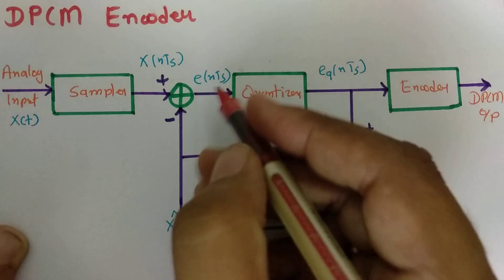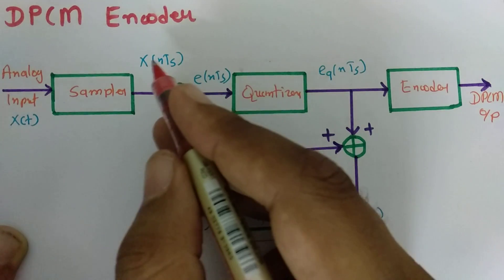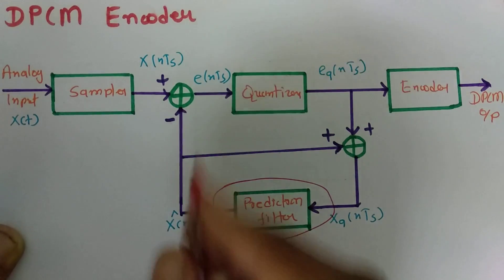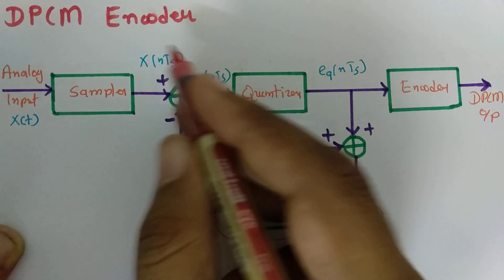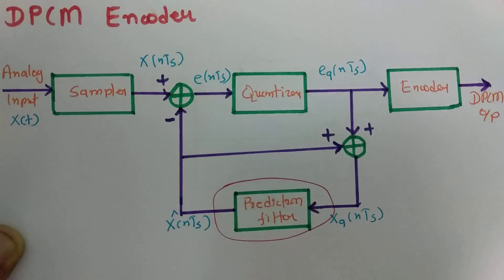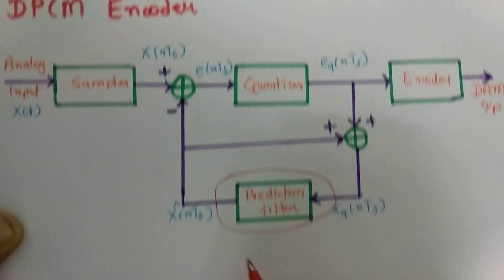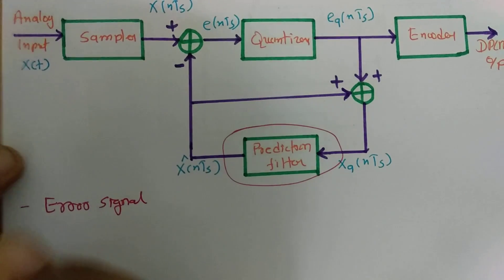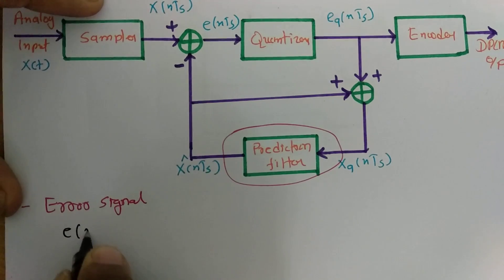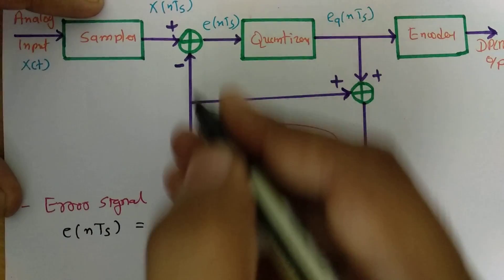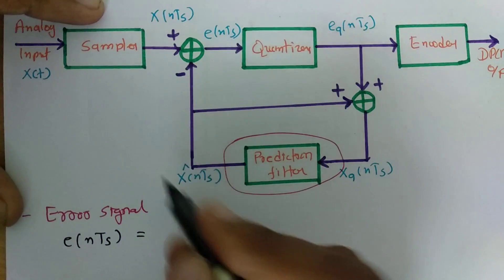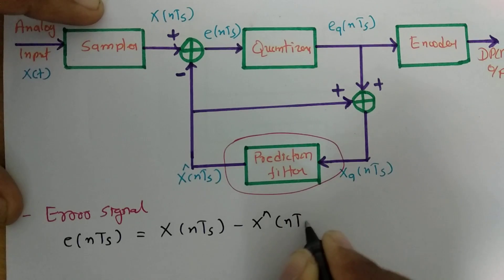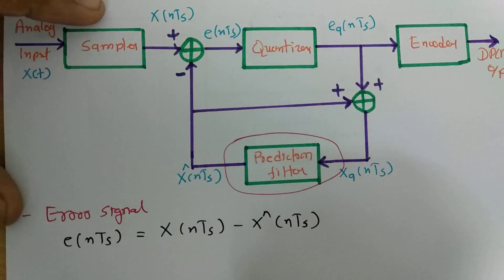Now let us understand step by step how this complete encoder functions. First, we generate the error signal, which is the difference between the sampled signal and the predicted signal. So the error signal E(NTs) equals X(NTs) minus X̂(NTs).